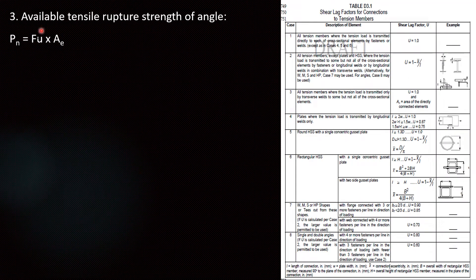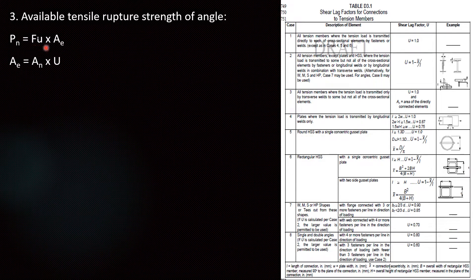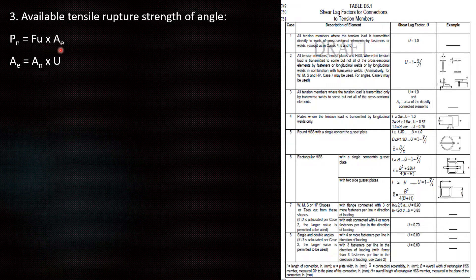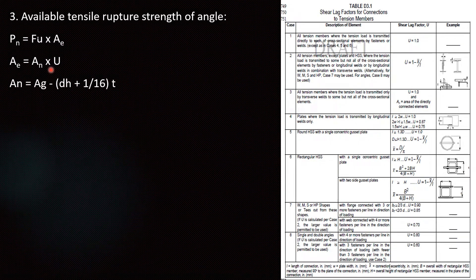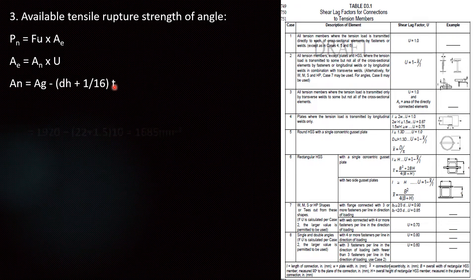Next we have to calculate the available tensile rupture strength of the angle. For rupture strength the formula is Fu into Ae. To find out Ae the formula is An into U. An is the net area. To find out the net area for this angle the formula is Ag minus (dh plus 1/16) into t.